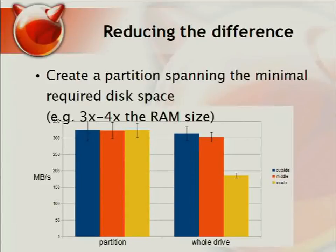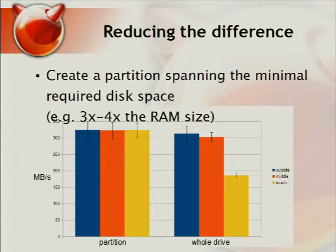This partition has to be large enough to run meaningful benchmarks — at least two times larger than your available memory — because if you run a sequential read or write test, you need to ensure it's not cached. Since a lot of data goes to filesystem metadata and UFS has a reserved portion of approximately 8%, you usually need three to four times the size of your RAM for this partition. On the left side is my partition, and on the right is the graph showing the whole drive. When you look at just this partition, the middle and inner parts have basically the same performance, plus or minus some noise.